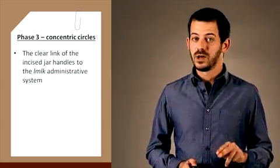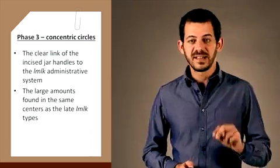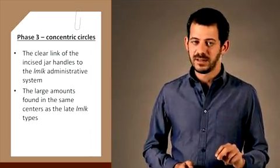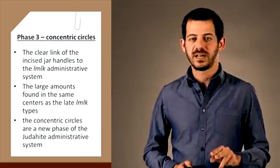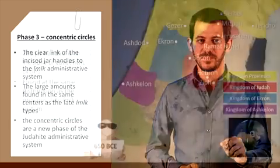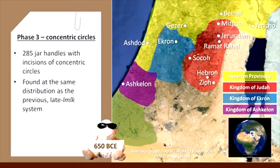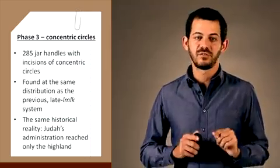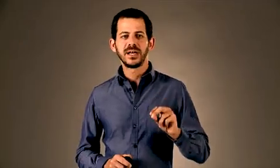The clear link of the large amount found in the same centers as the late Lamelech types are evidence that the concentric circles should be interpreted as a new phase of the Judahite administration system, overlapping and possibly replacing the original Lamelech system. Indeed, the 285 jar handles with incisions of concentric circles have thus far been found at the same distribution as the previous late Lamelech system. Thus, the same historical reality is reflected when the administration of Judah reached only the highlands.